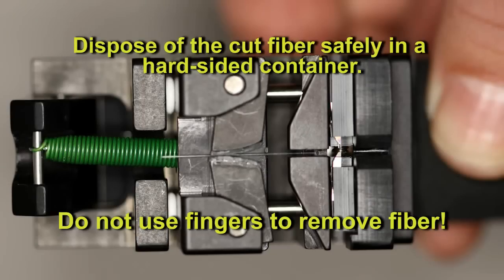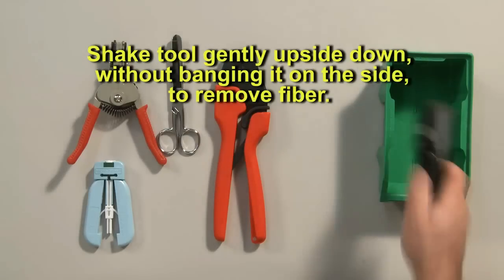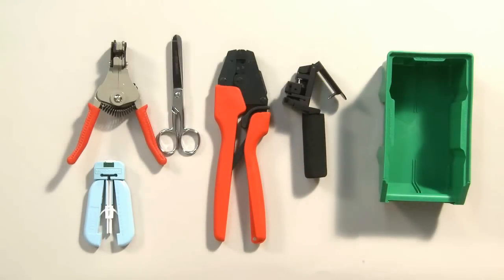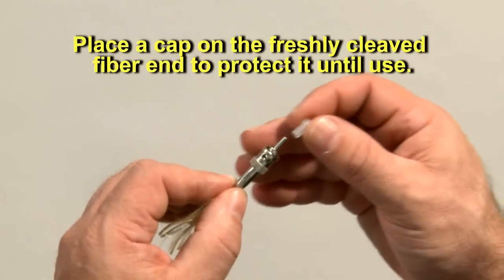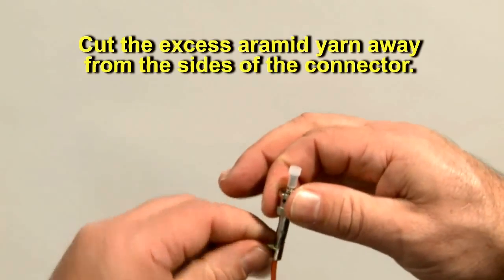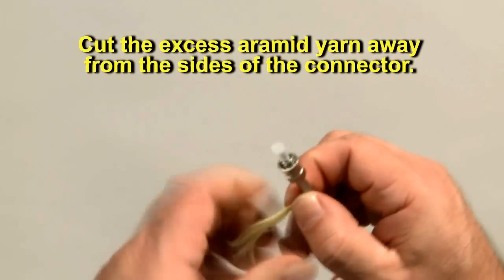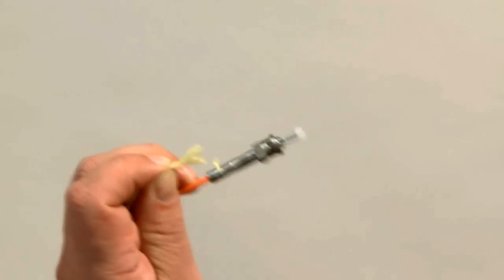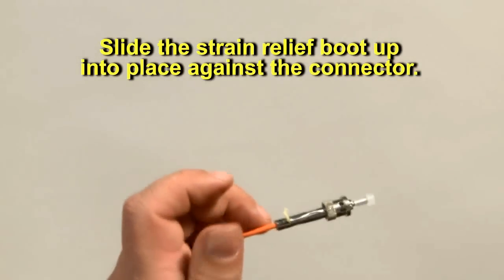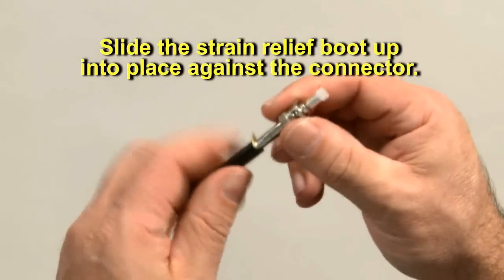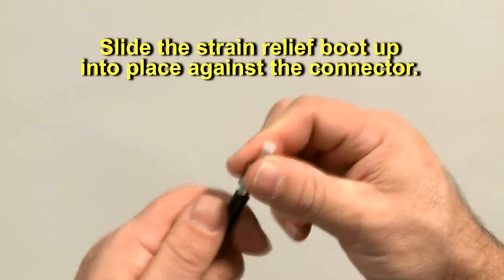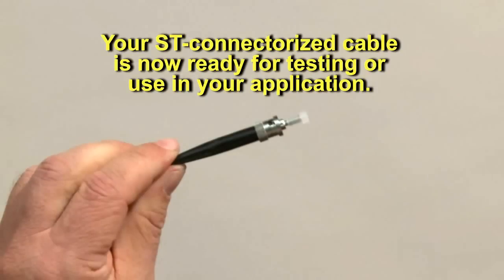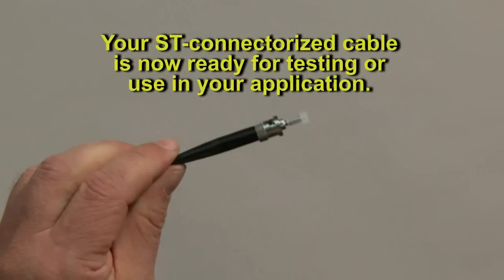Do not use your fingers to remove the bare fiber. Shake the tool gently upside down without banging it on the side. Place a cap on the freshly cleaved fiber end to protect it until use. Cut the excess aramid yarn away from the sides of the connector. Slide the strain relief boot up into place against the connector. Your ST connectorized cable is now ready for testing or use in your application.